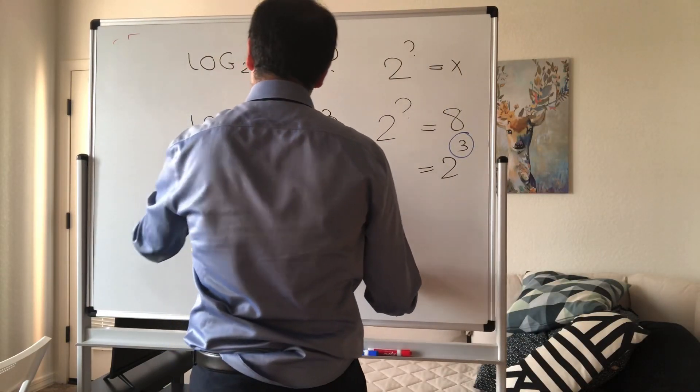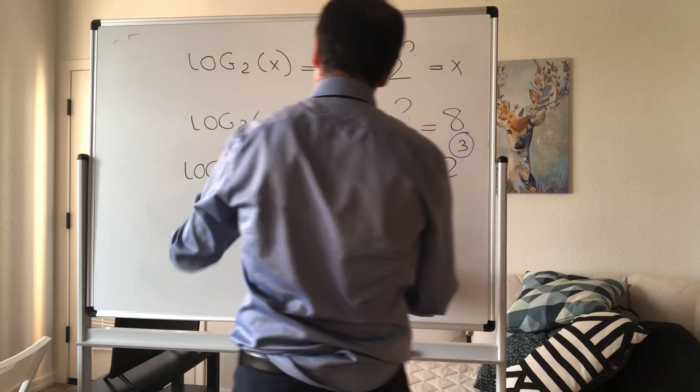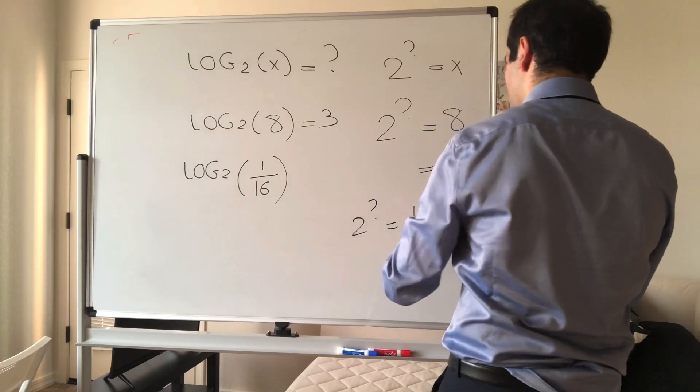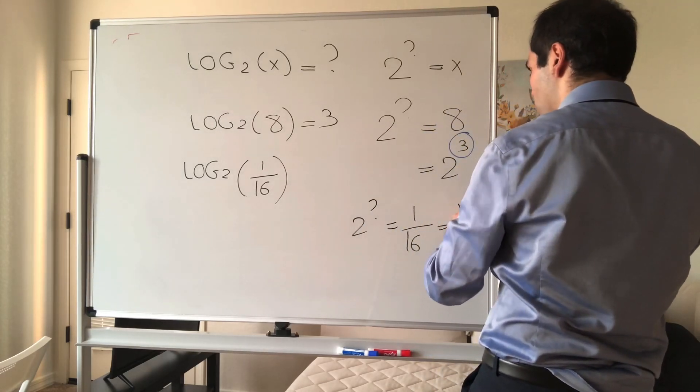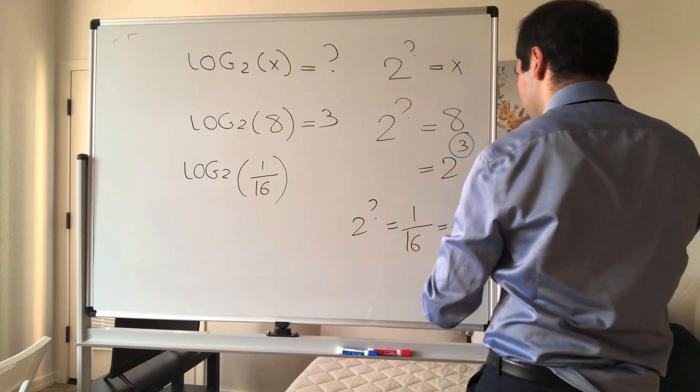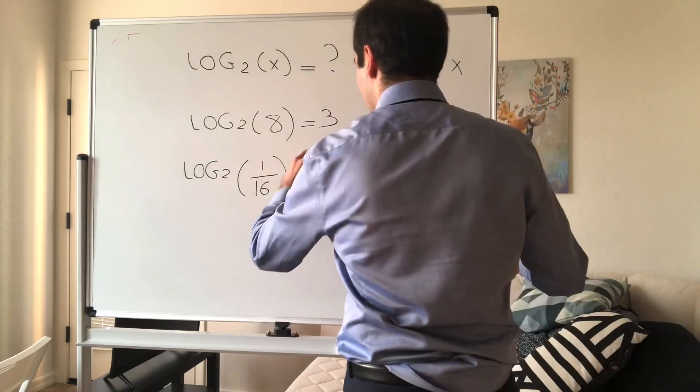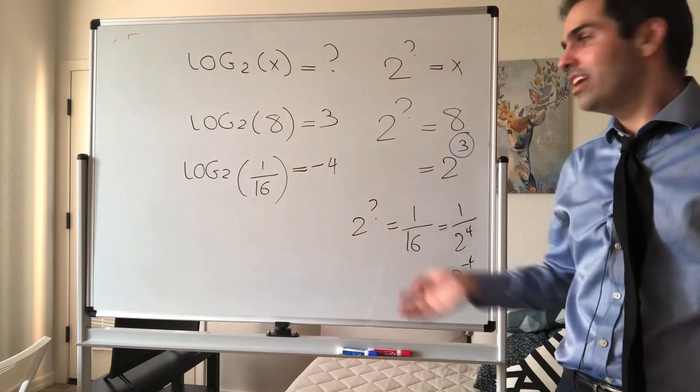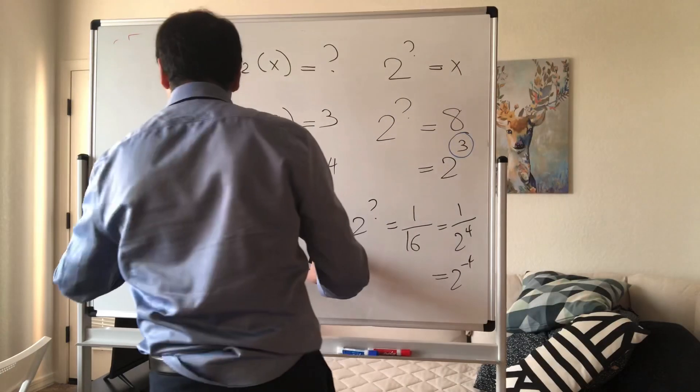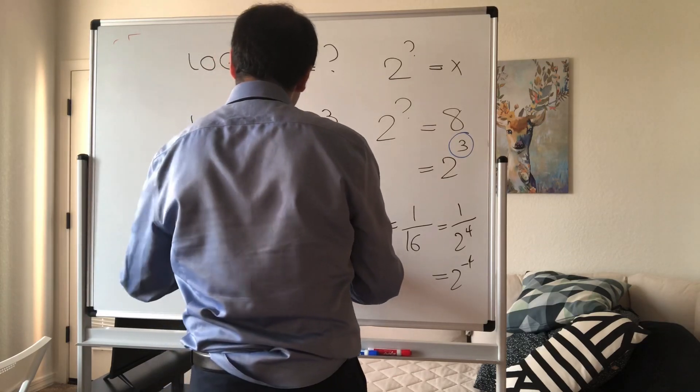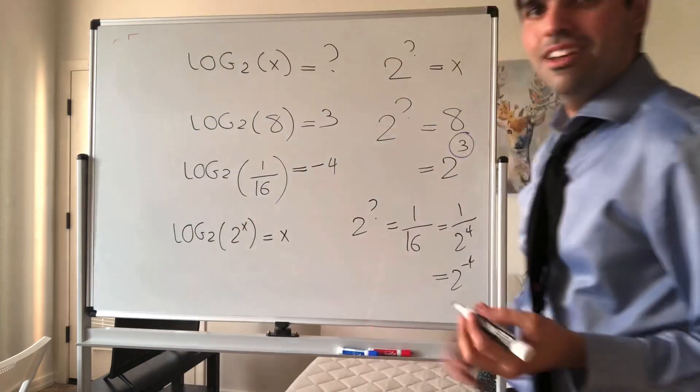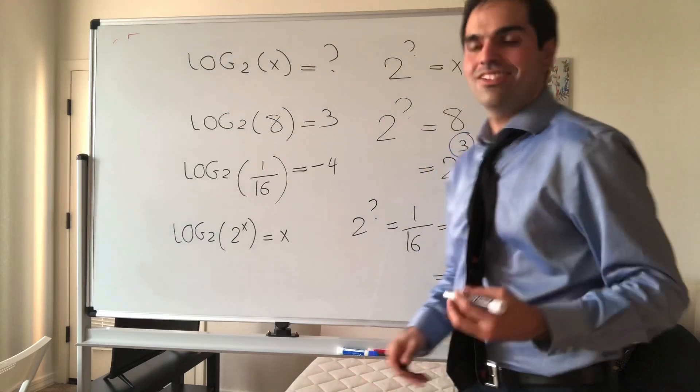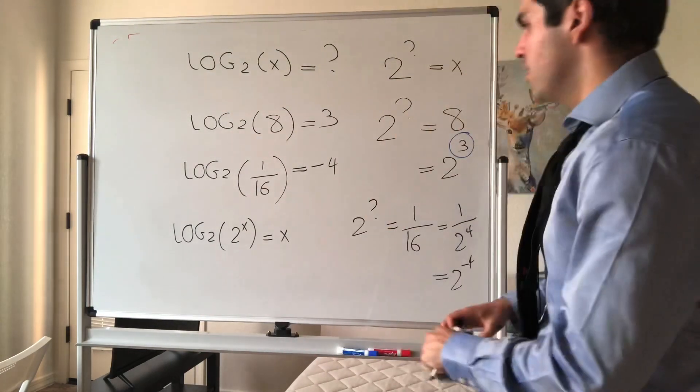Or for instance, what is log base 2 of 1 over 16? Well, 2 to the what is 1 over 16? 1 over 16 is 1 over 2 to the fourth, which is 2 to the minus 4, and we get the answer is minus 4. So again, just to really illustrate that the exponent doesn't matter, and you still have the same laws.